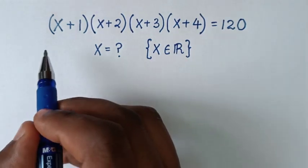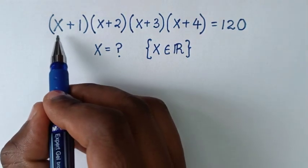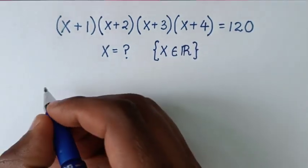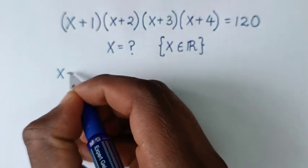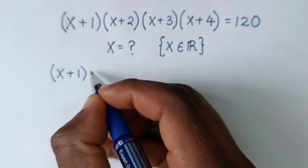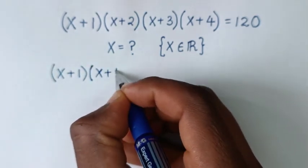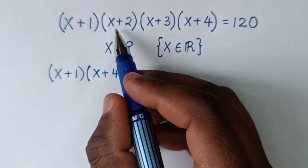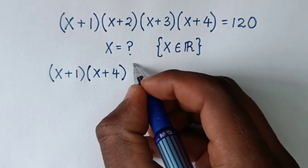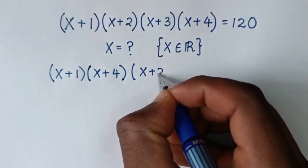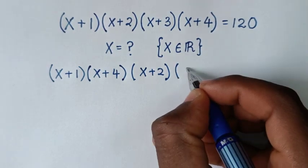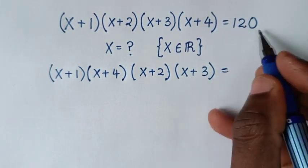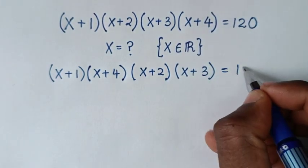Solution: first we will start by taking (x+1) times (x+4), then we will take (x+2) times (x+3), so it will be (x+1)(x+4) times (x+2)(x+3) is equal to 120.